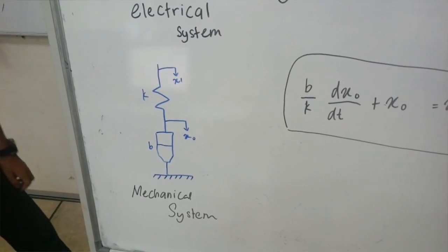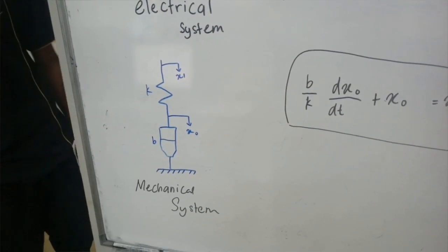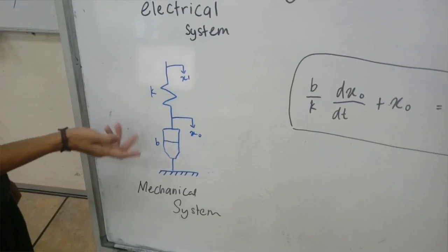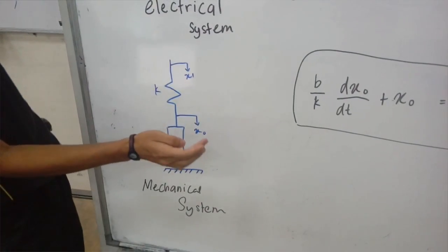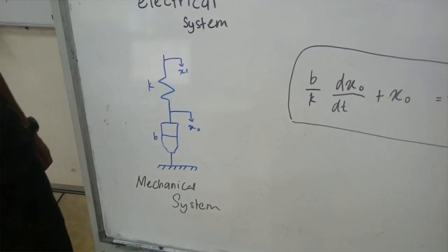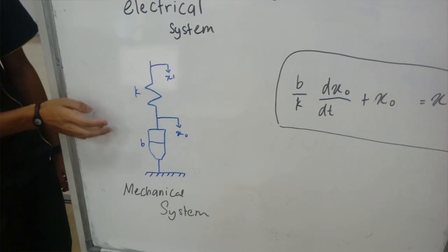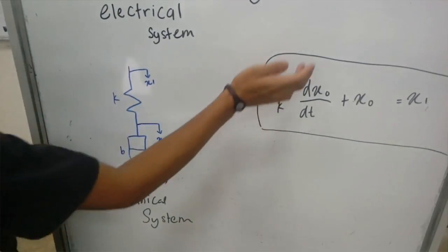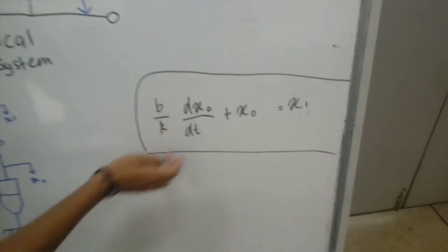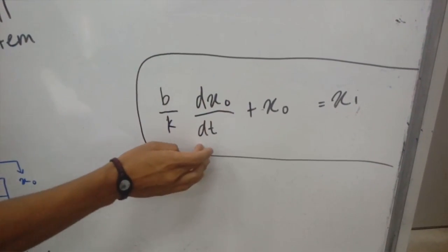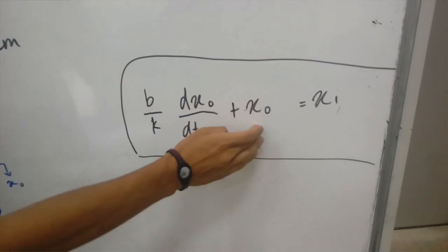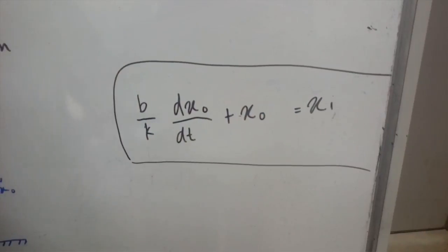Second, we have a mechanical system. In the mechanical system, we have K is constant, and we have input and output. So in the mechanical system, we have a formula: B/K times dX output/dt plus X output equal X input.